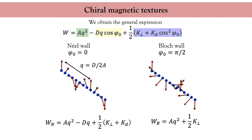That is great news, but to stabilize spin spirals, the Dzyaloshinskii-Moriya interaction needs to compete with both the exchange and the anisotropy. So in strong ferromagnets like transition metal compounds, it is unlikely that spin spiral states can be stabilized, and you often end up with a homogeneous ferromagnetic ground state.